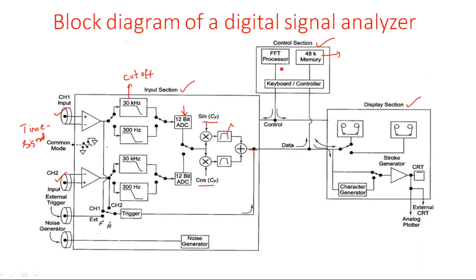The control section is connected between the input section and the display section. It takes data from the input section, performs FFT processing on the input samples, and then sends the processed data to the display section. The purpose of the display section is to display the incoming samples on the CRT screen.